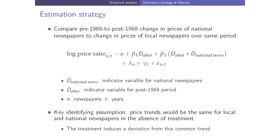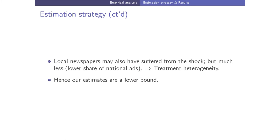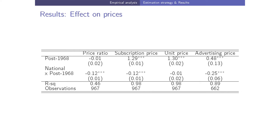Our estimation strategy compares the pre- to post-1968 change in prices of national newspapers to the change in prices of local newspapers over the same period. We regress the price ratio on a dummy for the post-1968 period, plus the interaction of the post-1968 dummy with a dummy for national newspapers, adding newspaper fixed effects and year fixed effects. The key identifying assumption is that price trends would have been the same for local and national newspapers absent treatment. Both groups are treated to some degree, so our estimates are a lower bound.